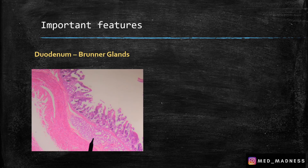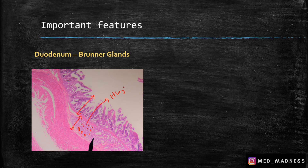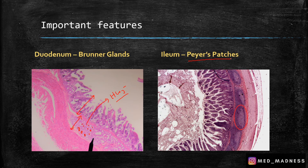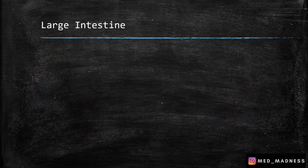Peyer's patches are lymphoid aggregates in the lamina propria and submucosa of the ileum, where B and T cells are large in number. Now I'll show you the histology slides. This is the duodenum — you can see the mucosa and the submucosa. If you look into the submucosa, you can see glands — this is the most distinct feature of the duodenum: Brunner's glands, which secrete bicarbonate into the lumen of the duodenum to help protect the duodenal wall from acids. For the ileum, you can see Peyer's patches in the submucosa as well as in the lamina propria.